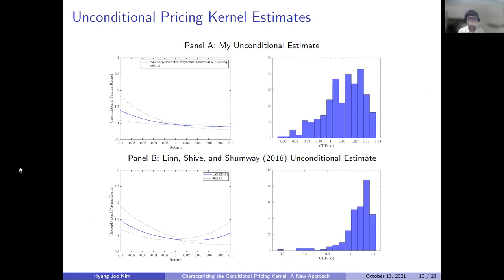Before looking at my conditional pricing kernel estimates, I'd like to show how this estimation works for the unconditional pricing kernel. Panel A shows my estimation result, and for comparison, Panel B shows the result of Linshive and Shunwei. The blue line represents the unconditional estimates and the dotted black lines represent the 90% confidence intervals. Overall, both estimates look quite similar. However, looking at the right-hand histograms that describe the distribution of the CDF values, there is a clear difference between the two histograms. The main difference is the inclusion of the P density restriction in Panel A, which is well captured as all the CDF values are near 1.